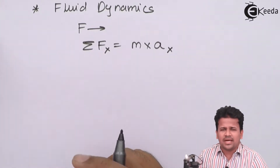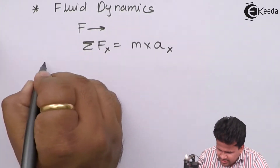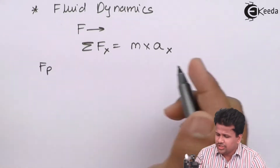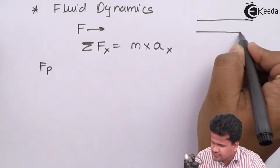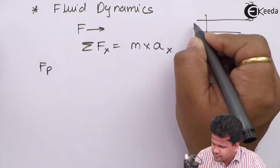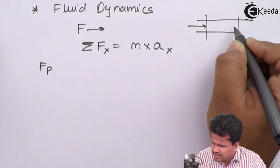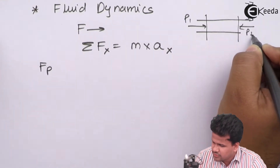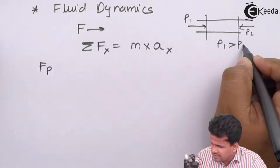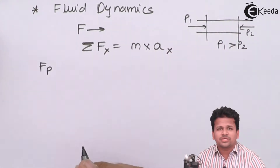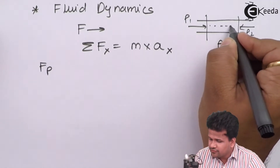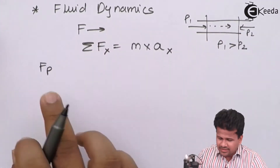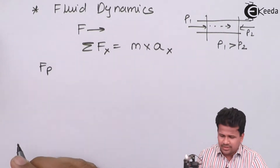The first force acting is the force due to pressure. If there is a pressure difference between the two ends of a pipe — P1 and P2 — and if P1 is greater than P2, then the fluid is going to flow towards the right. So that is the force due to pressure.